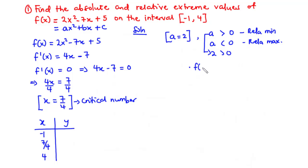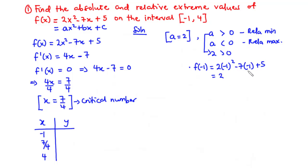For f(-1): 2 times (-1)² minus 7 times (-1) plus 5. Now (-1)² is 1, so 1 times 2 is 2. Negative 7 times negative 1 is 7, and then plus 5. So 2 plus 7 is 9, plus 5 is 14.